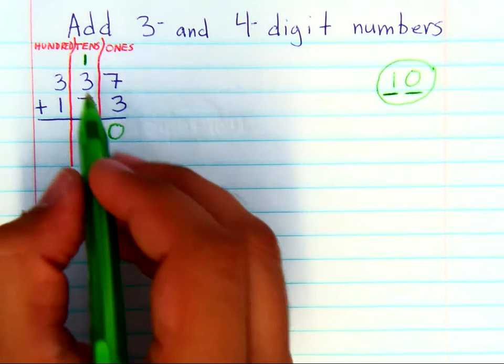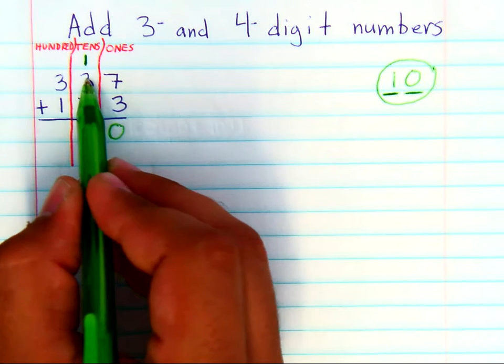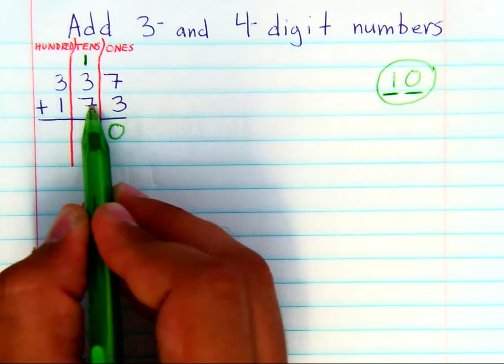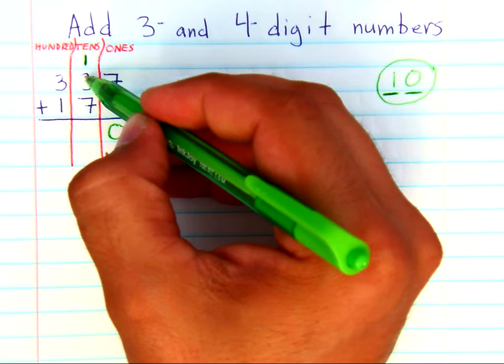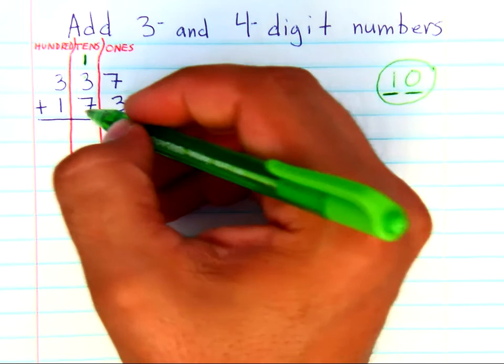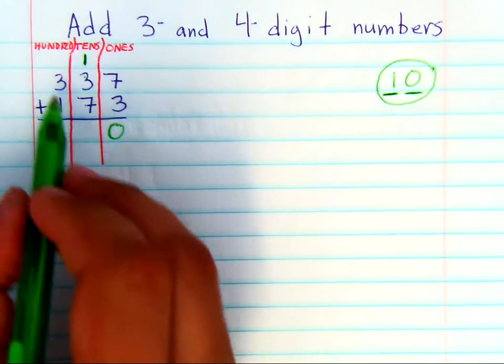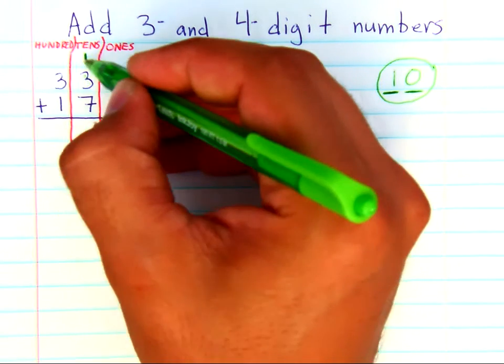So now when you add the tens together, you have a ten plus three tens plus seven tens. Seven plus three gives you 70 and 30, gives you 100, which we can probably already know that that's going to go up there. But seven and three is ten, plus one is eleven.